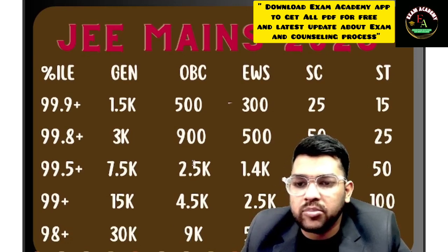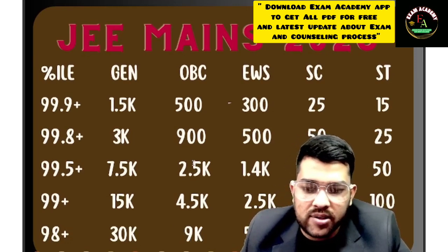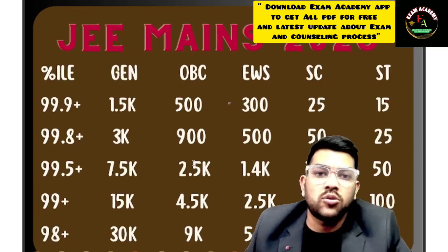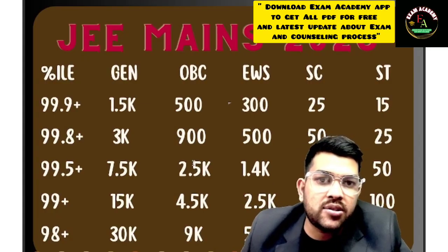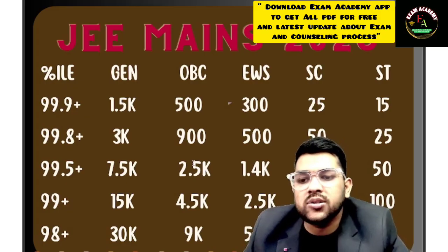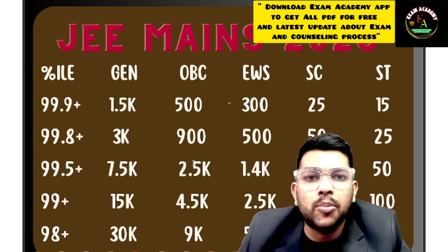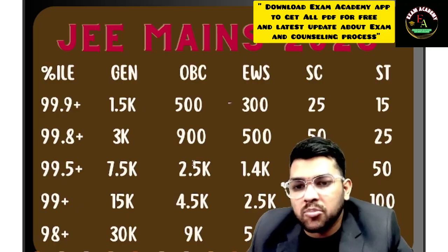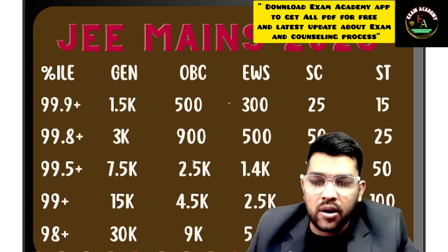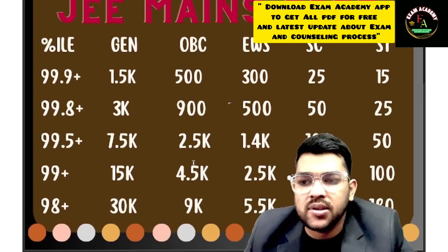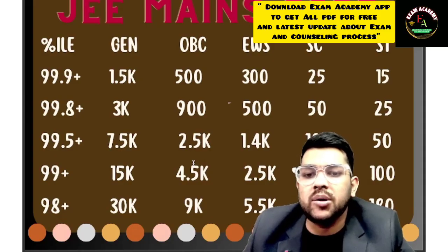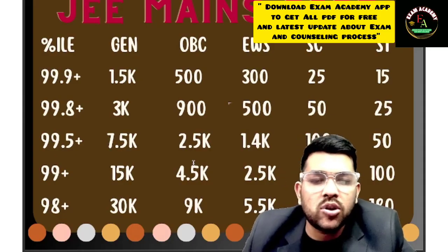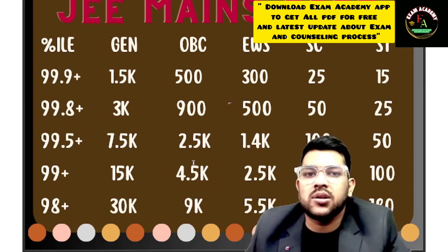For 99 percentile — General: 15,000, OBC: 4,500, EWS: 2,500, SC: 300, ST: 100. I am providing category-wise ranks because in JoSAA counseling you will see category-wise cutoff ranks. For example, if you are checking EWS cutoff and it mentions 3,000 or 3,050, that is the EWS category rank. For PWD, I have made a separate video — check the i-button, description box, or the PWD playlist.